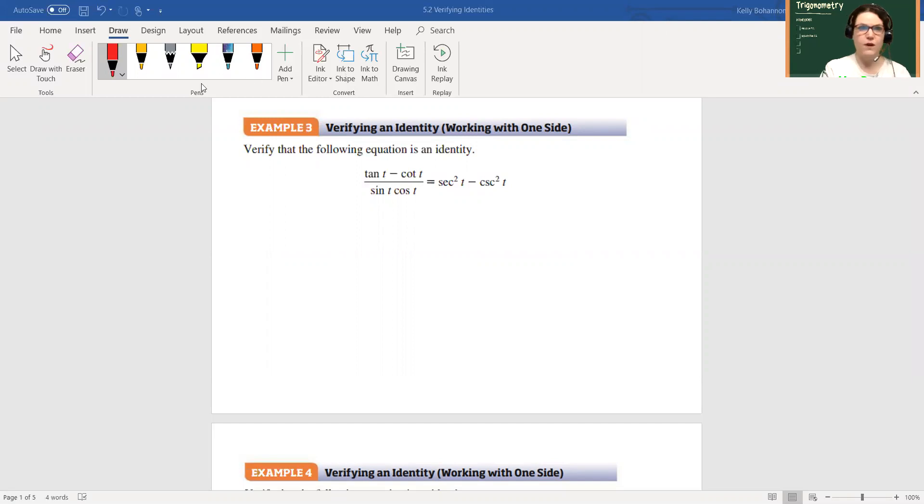Remember our hints say that you want to start with what looks like the most complicated side. In this case I have tangent, cotangent, sine, and cosine, so I'm going to call this the most complicated side.